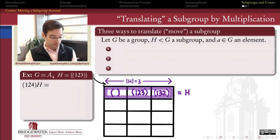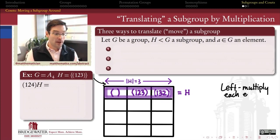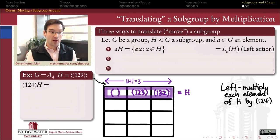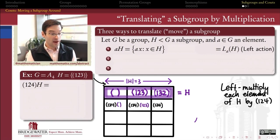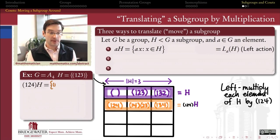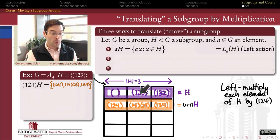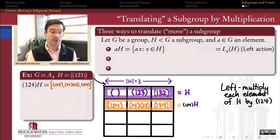So let's keep score. (1 2 4) multiplied by H — left multiplying all these elements by (1 2 4) gives me a new set of elements. I'm going to call that the left action of (1 2 4) on the subgroup H. The elements we get in this process are (1 2 4), (1 4 2 3), and (1 3 4). What you'll notice about this left action applied to H is it still has three distinct elements, and also that none of those three elements were elements of H. So this purple subgroup and this orange left coset are disjoint from one another.